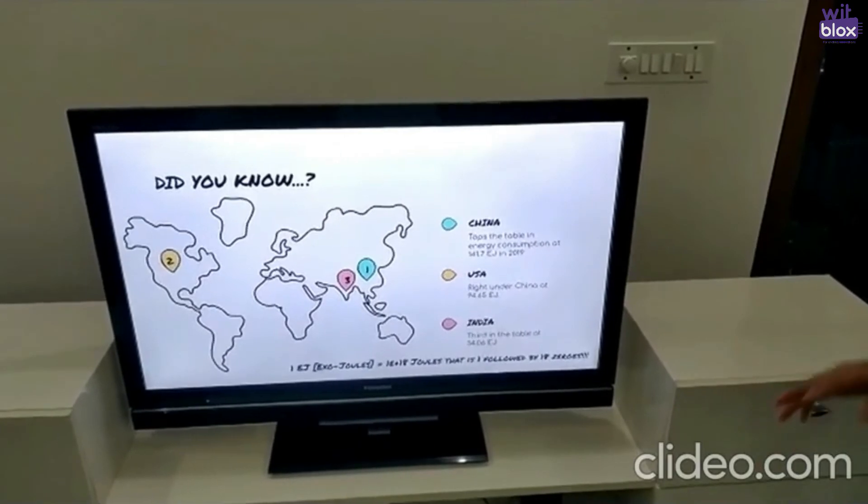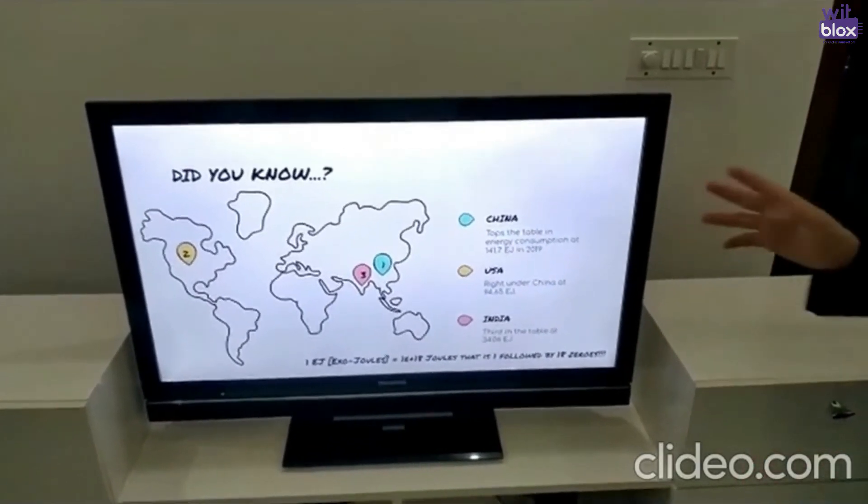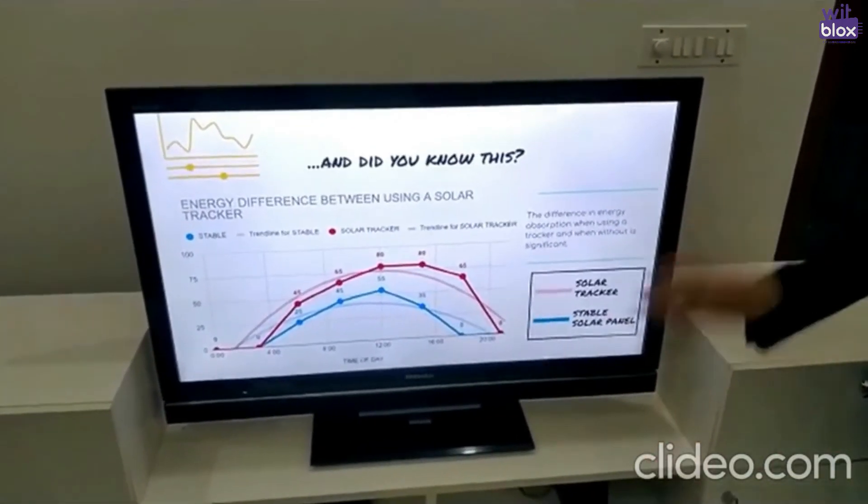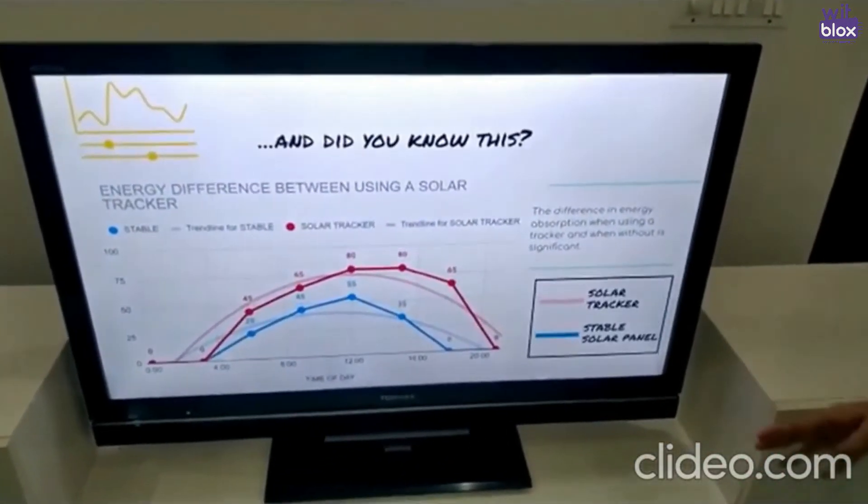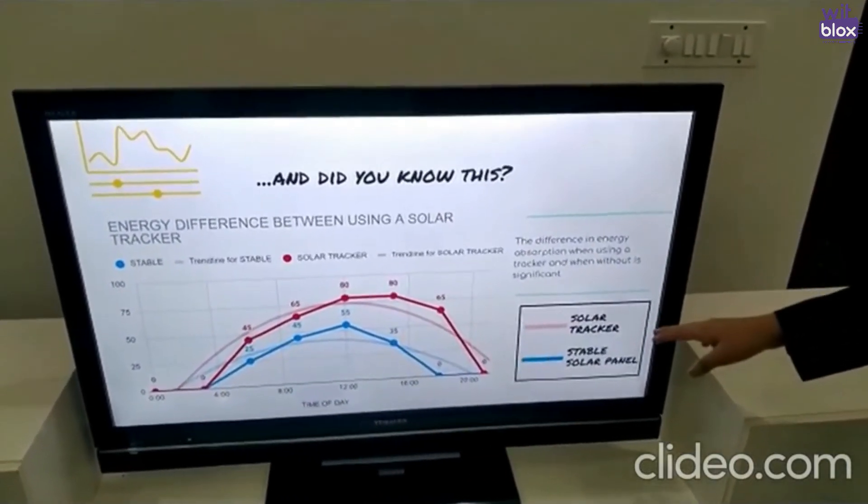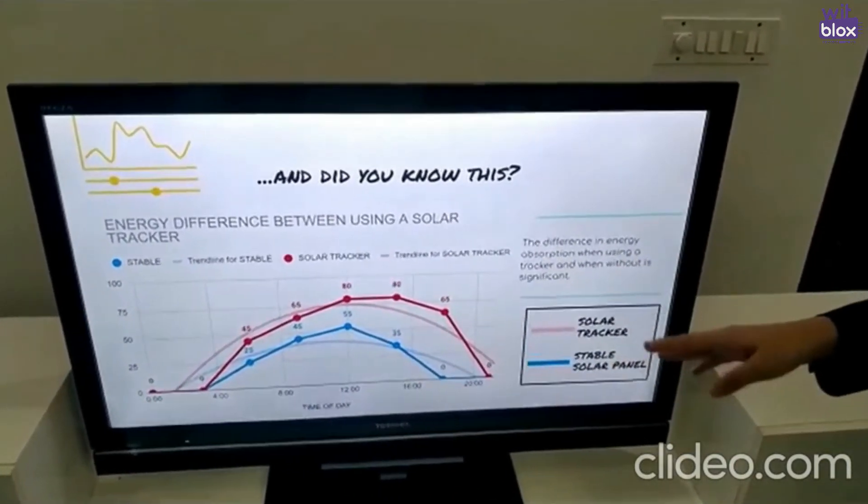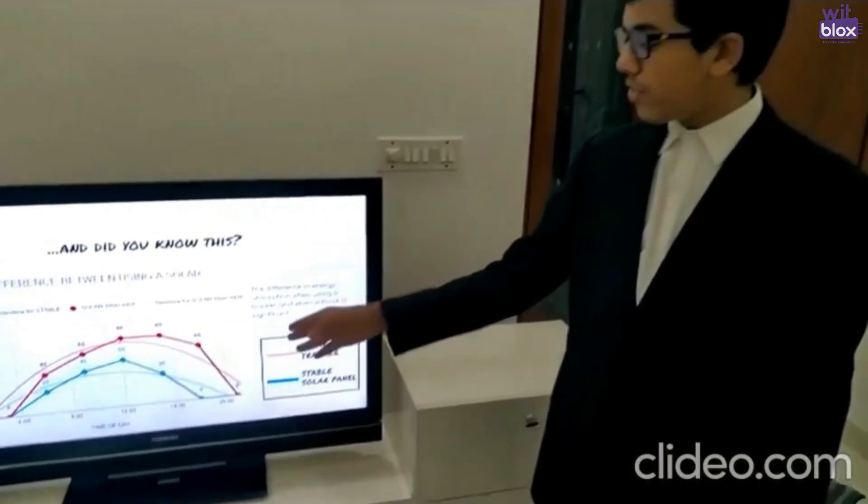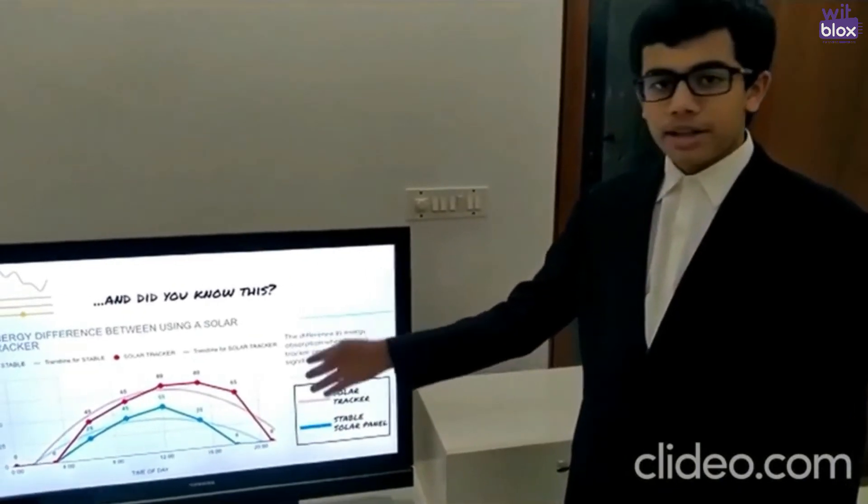Just to give an idea of the energy consumption throughout the world. And using a solar tracker can make a difference. As you can see here, the red line represents the energy absorbed by the solar tracker while the blue line represents energy absorbed by the solar panel. There is a considerable amount of difference in the energy leveraged by the two.